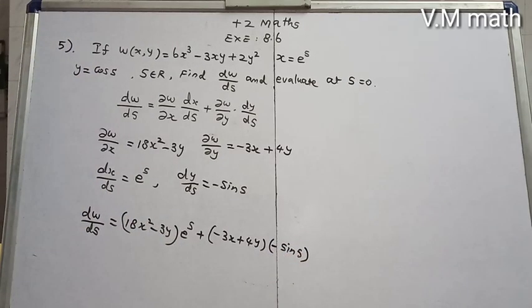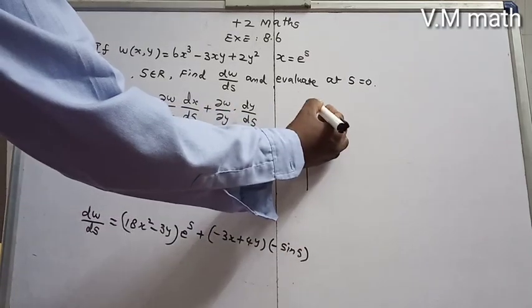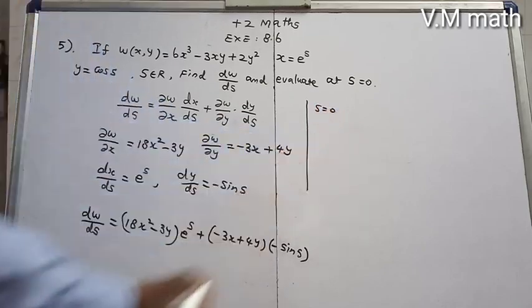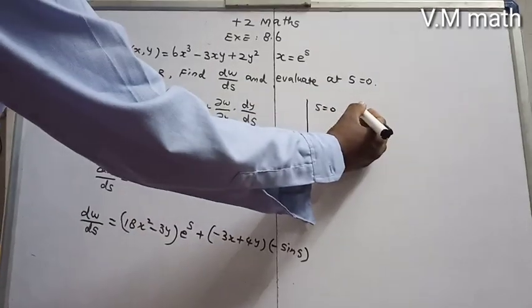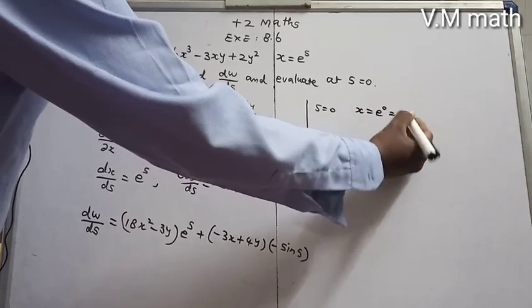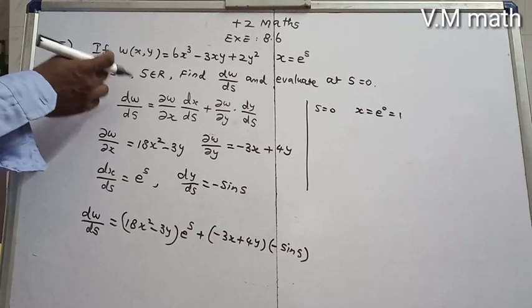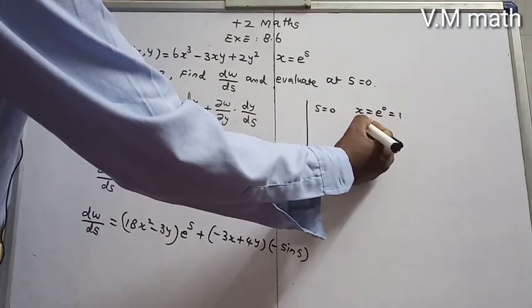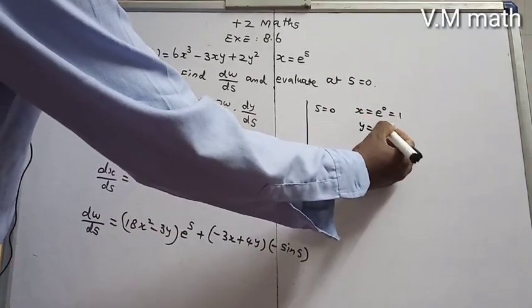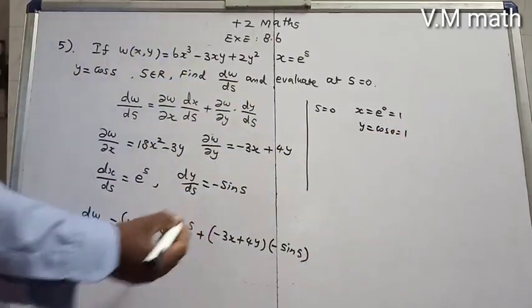Evaluating at s = 0: e^0 = 1, so x = 1. And cos(0) = 1, so y = 1.